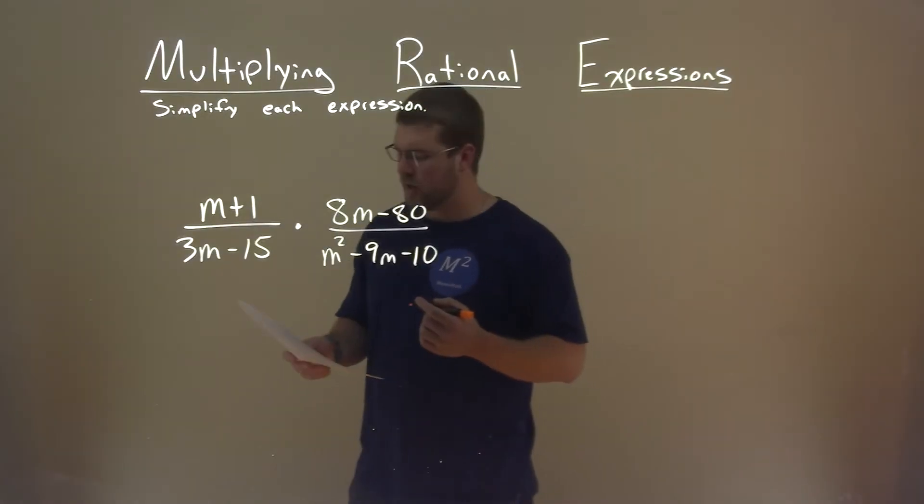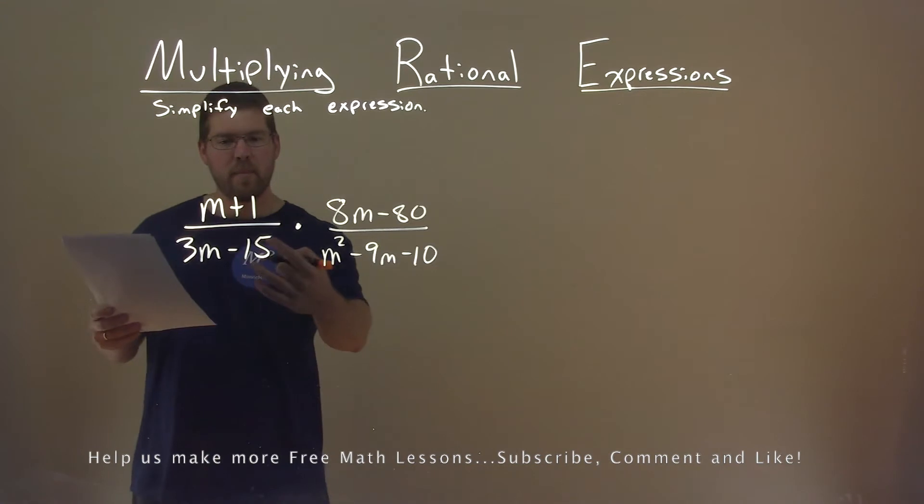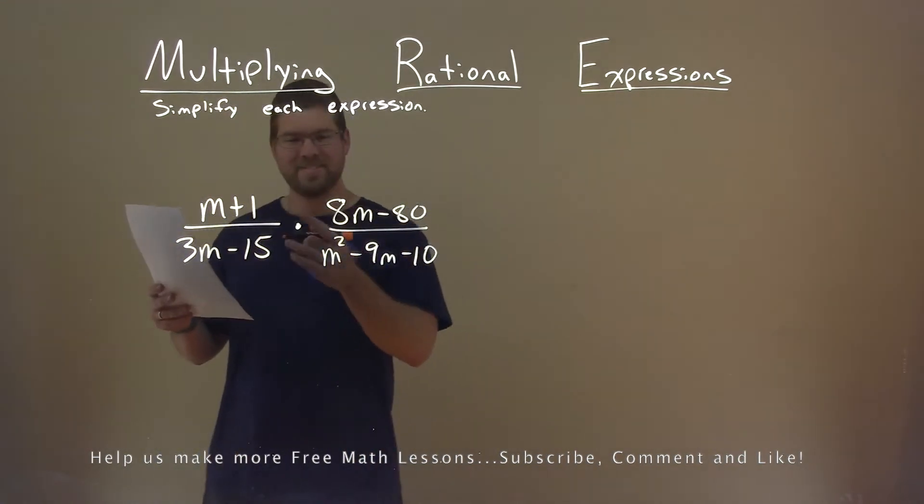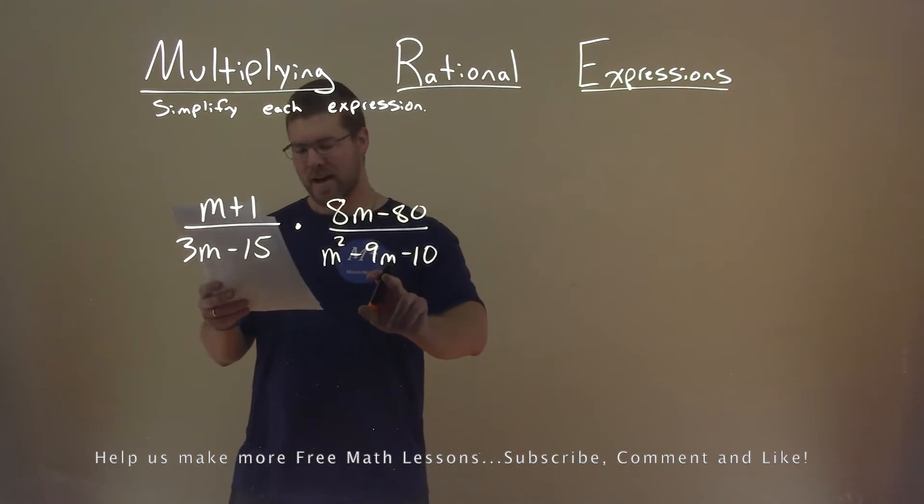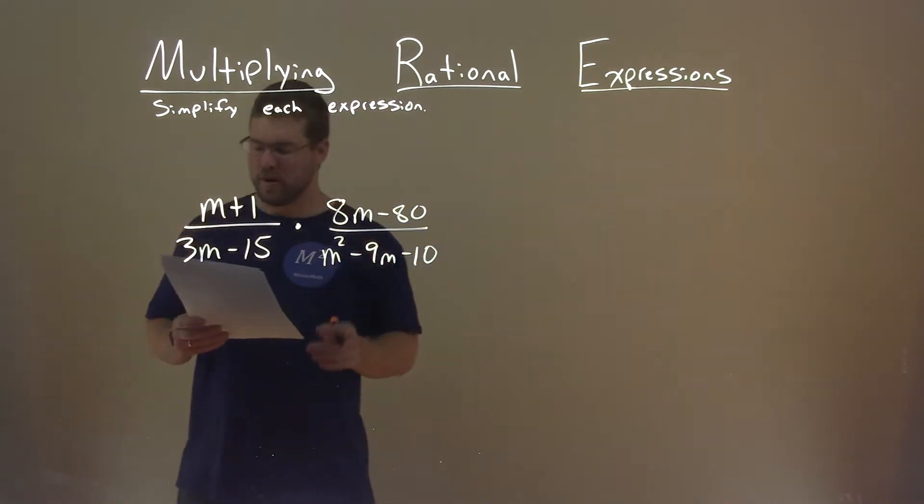We're given this problem right here: m plus 1 divided by 3m minus 15 times 8m minus 80 divided by m squared minus 9m minus 10, and we want to simplify this expression.